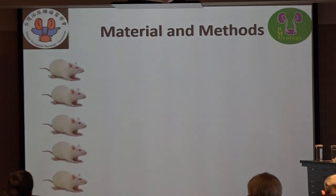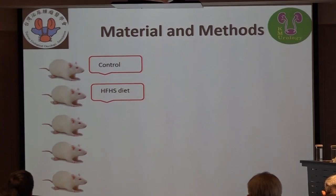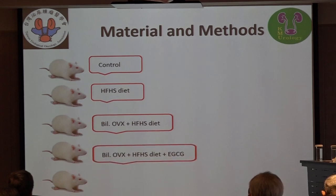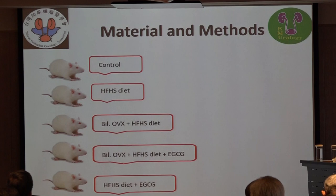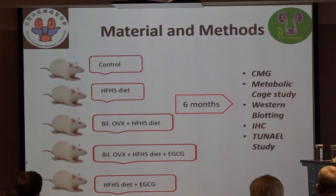Our study design divided SD rats into five groups: the control group; a group fed with high-fat, high-sugar diet; a third group given high-fat, high-sugar diet plus bilateral ovariectomy to mimic menopause; a fourth group with bilateral ovariectomy, high-fat high-sugar diet, and EGCG treatment by intraperitoneal injection daily; and a fifth group with high-fat high-sugar diet and EGCG treatment. After six months of treatment, we performed cystometrography and metabolic assessment.